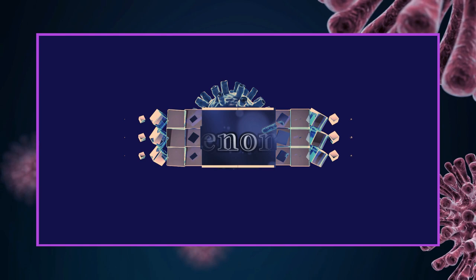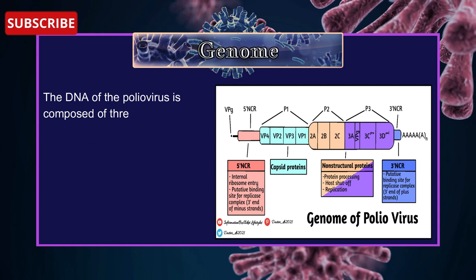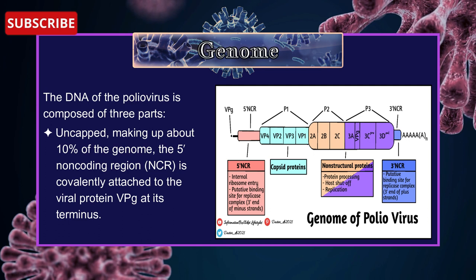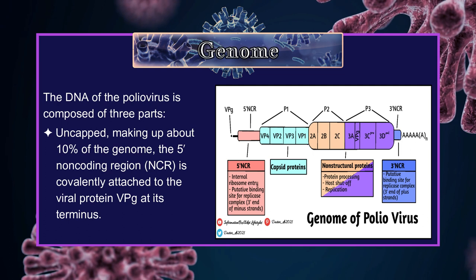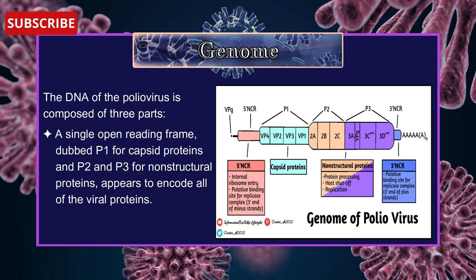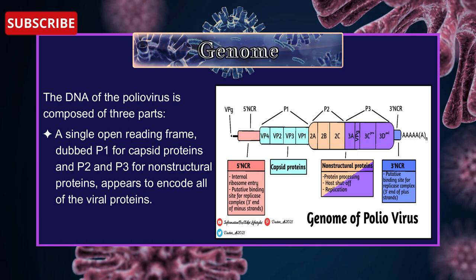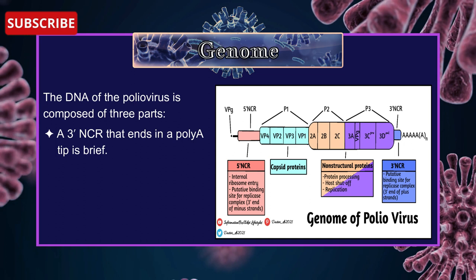Genome of Poliovirus. With the help of this diagram, we will understand the genome. The RNA of the poliovirus is composed of three parts. The 5' non-coding region is covalently attached to the viral protein VPg at its terminals, making up about 10% of the genome. A single open reading frame, dubbed P1 for capsid proteins and P2 and P3 for non-structural proteins, encodes all of the viral proteins. A 3' NCR that ends in a poly-A tail is brief.